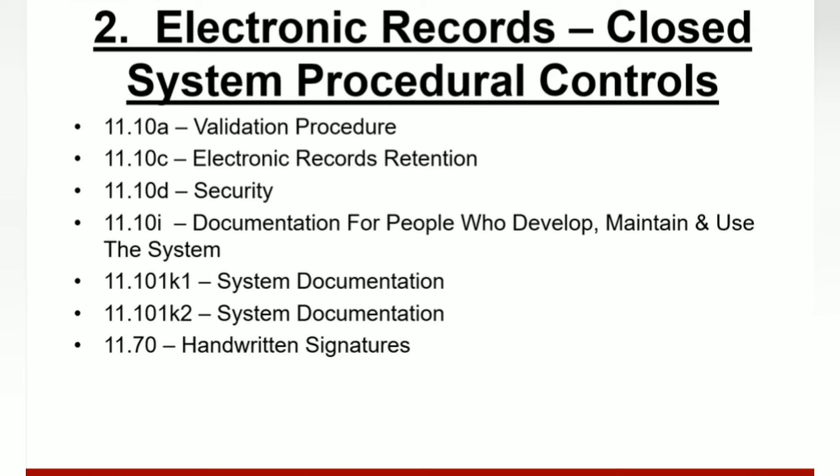For 11.10I, documentation must exist showing that persons who develop the system have the education, training, and experience to perform their assigned tasks, including temporary and contract staff. Similarly, persons who use the system must have the education, training, and experience for their assigned tasks. For 11.10K1, distribution of access to and use of system documentation must be limited to authorized and adequately trained personnel. For 11.10K2, a system documentation change control procedure to maintain an audit trail — either electronic or paper — that documents modifications must exist. For 11.70, if handwritten signatures are executed to electronic records, the handwritten signatures must be linked to the electronic records.